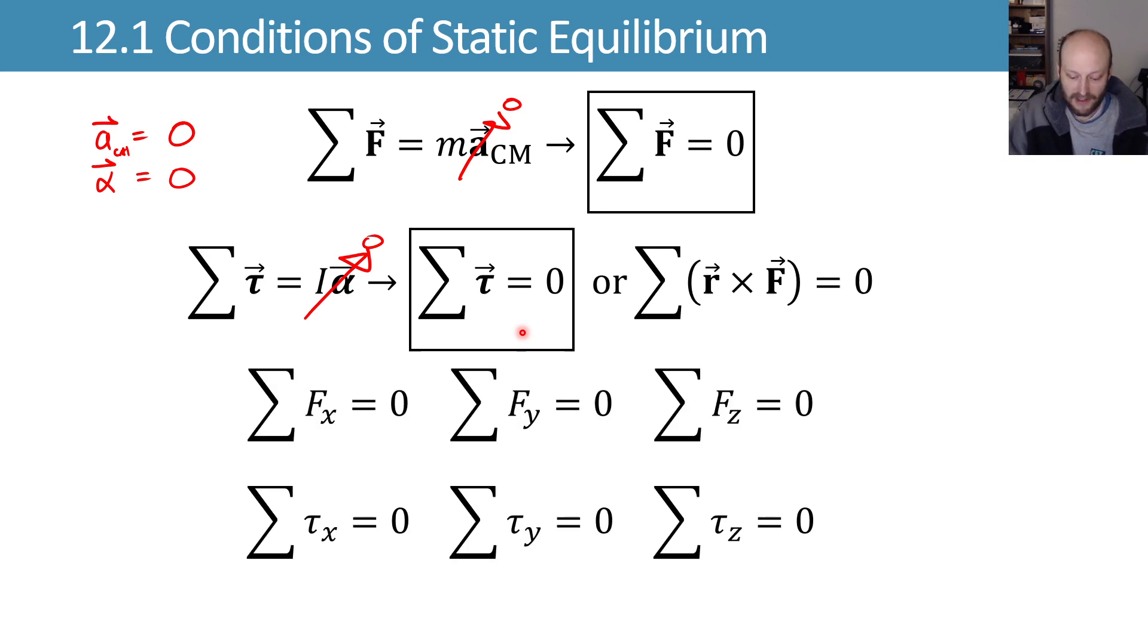And we can express this in x, y, z coordinates like this, where the sum of the forces in any direction you choose is going to be zero, and the sum of the torques about any axis you choose is going to be zero.